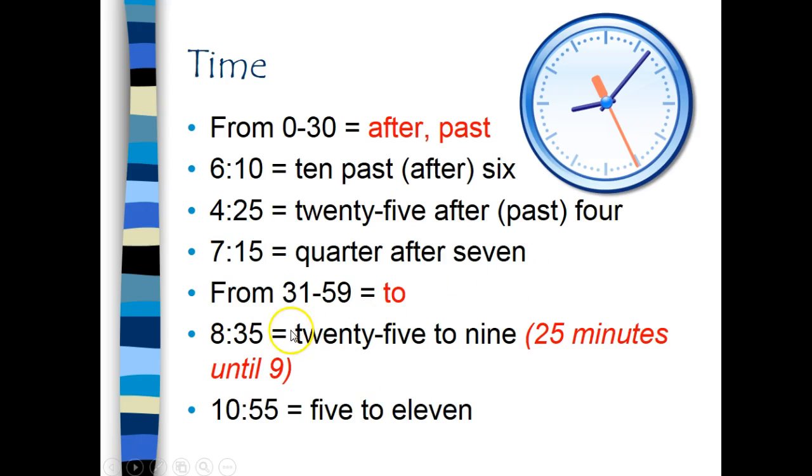But when we have the minutes from 31 to 59, we say it is TO because it is going to the next hour. So 8:35 on a digital clock would be 25 to 9, which means 25 minutes before 9 o'clock. 10:55, of course, I can say 10:55, or I can say 5 to 11.